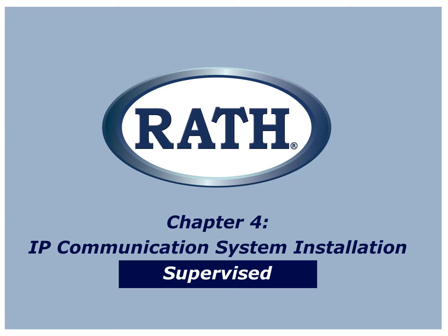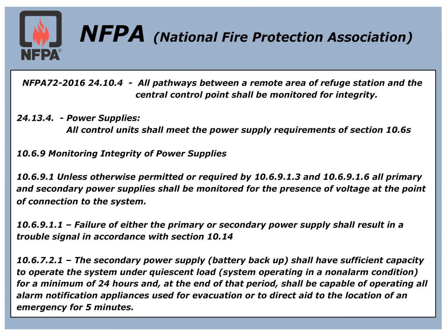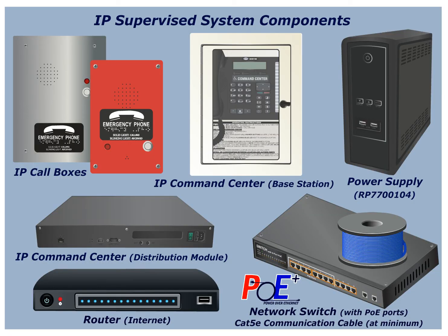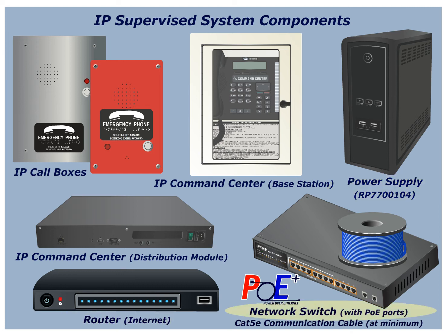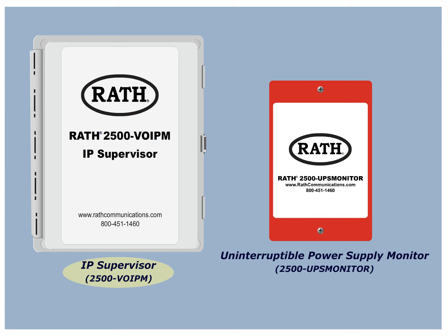Chapter 4: Supervised System Installations. The code requirements in this section are from NFPA 72-2016, referencing system integrity and power requirements. The components for this system include 2100-series IP call boxes, an IP command center base station with distribution module, power supply RP-7700104, router, network switch with POE ports, Cat5e communication cable at minimum, IP supervisor 2500 VOIPM, and an uninterruptible power supply monitor 2500 UPS monitor.